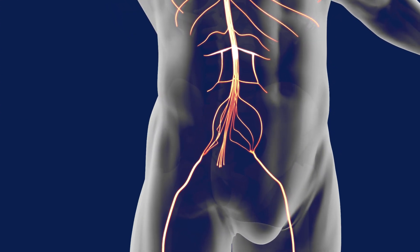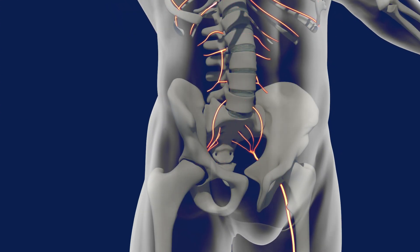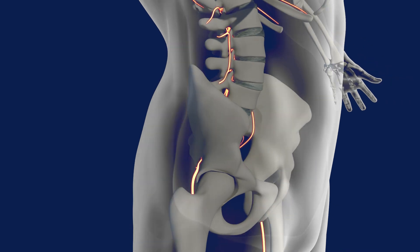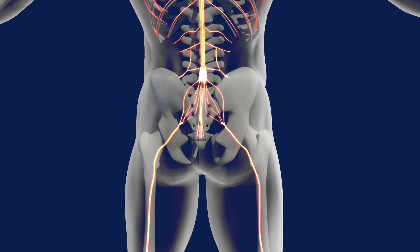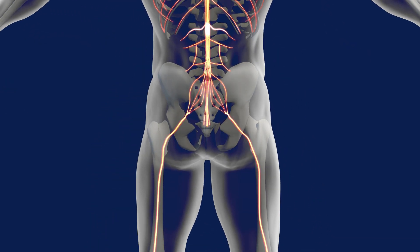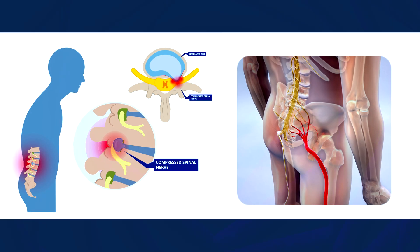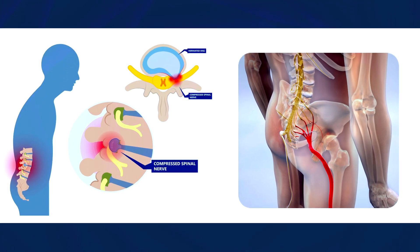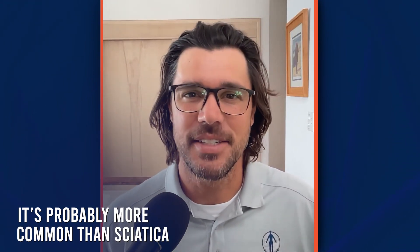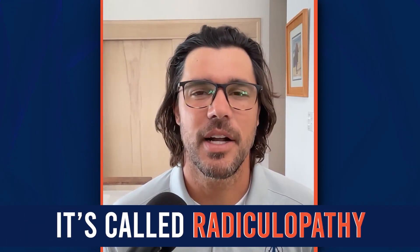I'm going to do a deep dive into human anatomy, the nerve pathway, the muscles, and ways that the sciatic nerve can get pinched. We're also going to talk about what is true sciatica and what actually might feel like sciatica — nerve pain down your legs, referred to as radicular pain — but it's not actually sciatica, and it's probably more common than sciatica. It's called radiculopathy.